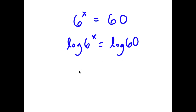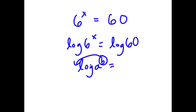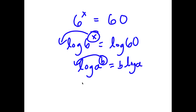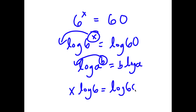Now, if I have something in the form log a to the power of b, I can move this exponent b to the front — so this equals b times log a. In this case, I have log 6 to the power of x, and I can move x to the front. So now I have x times log 6 is equal to log 60.